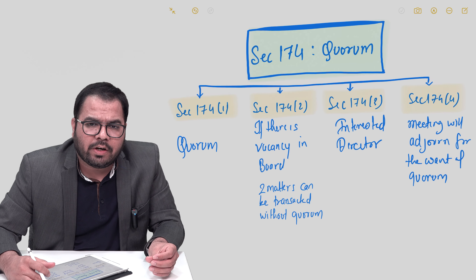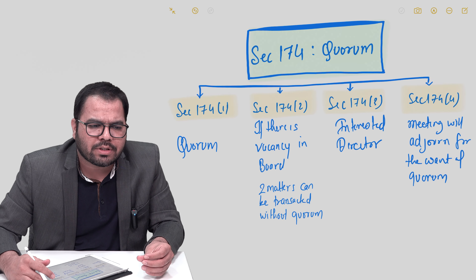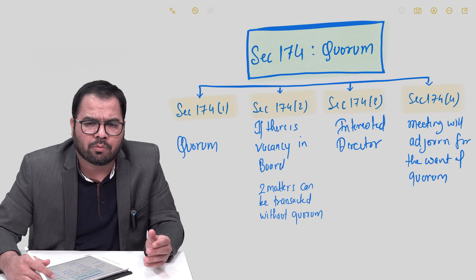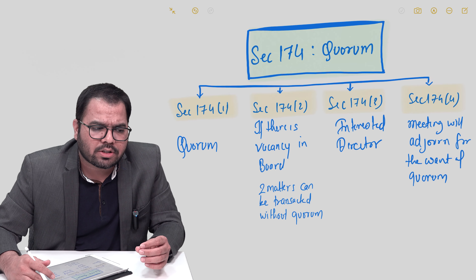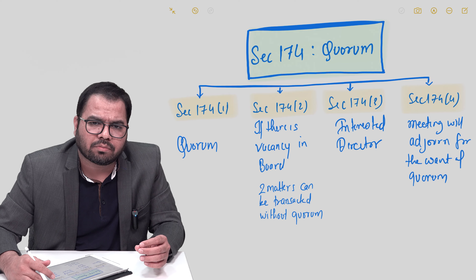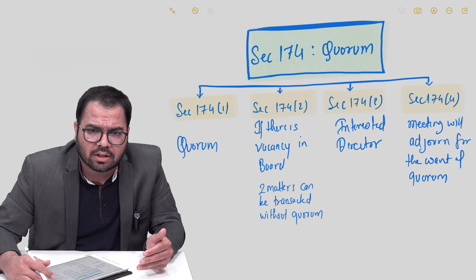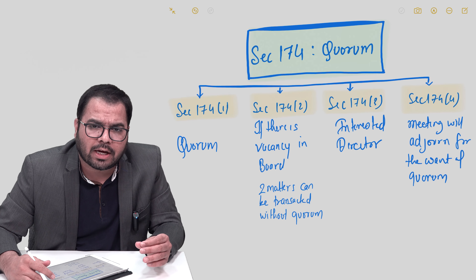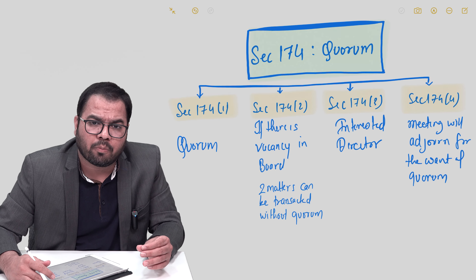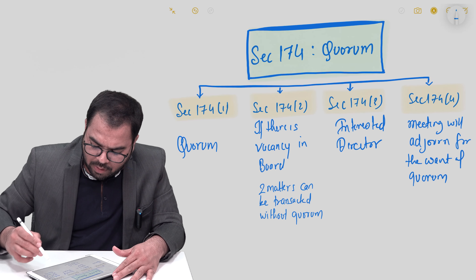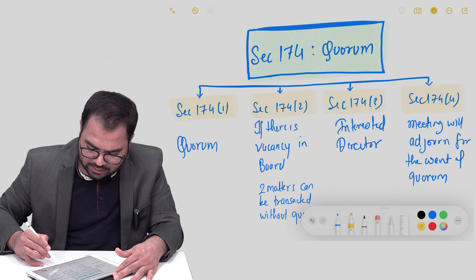Section 174 subsection 2 provides that if there are few directors — for instance, some directors resigned, were removed, or passed away — and the number falls below the minimum quorum required, in that case, if there is a vacancy in the board, there are two specific matters which can be transacted in the board meeting without the quorum.